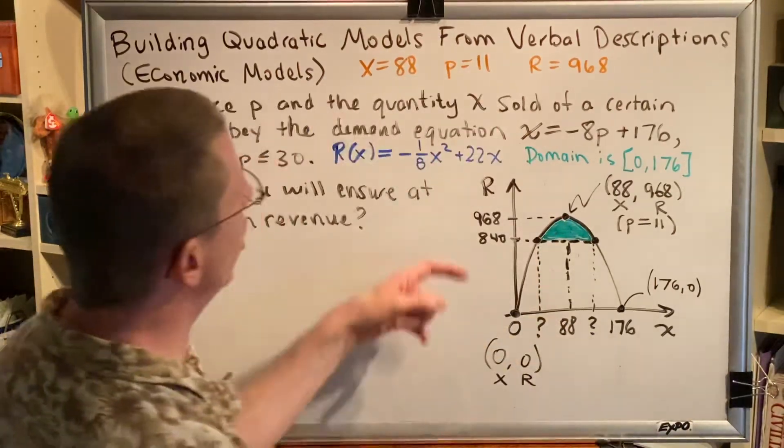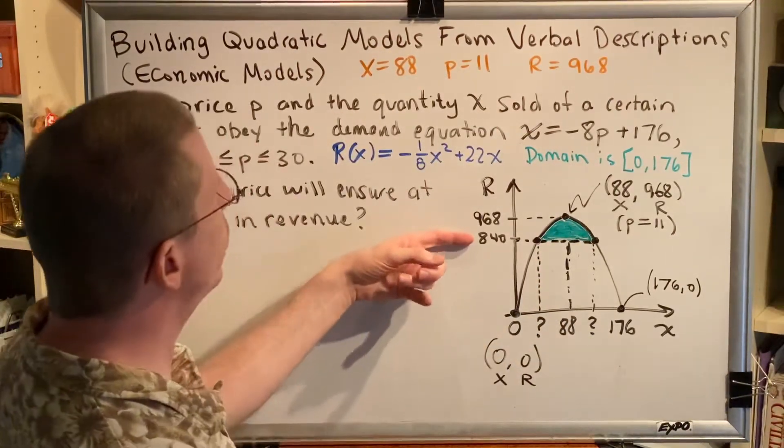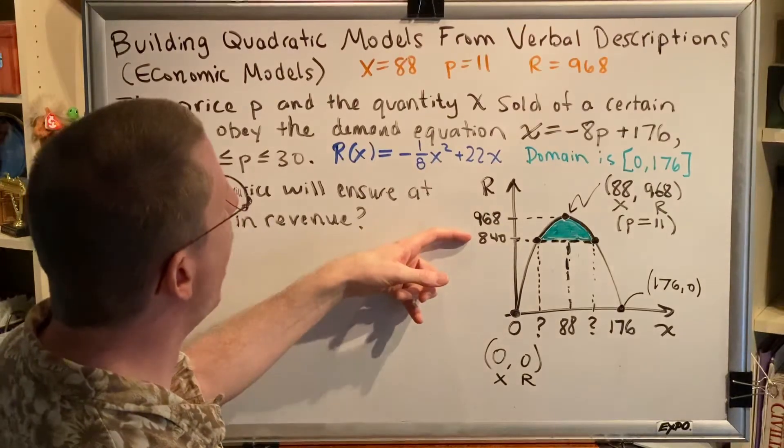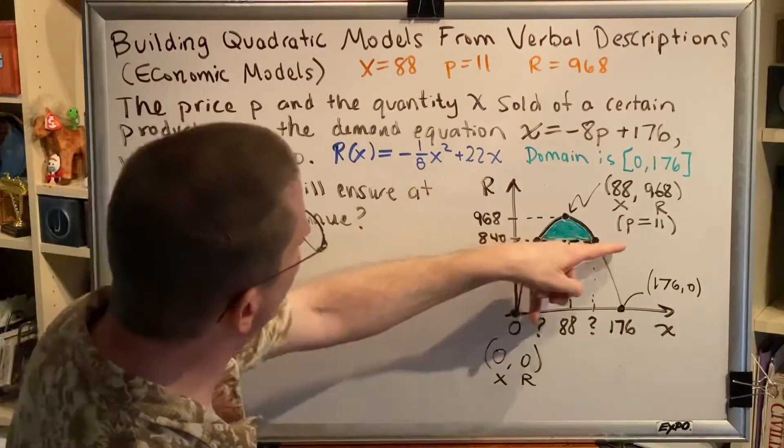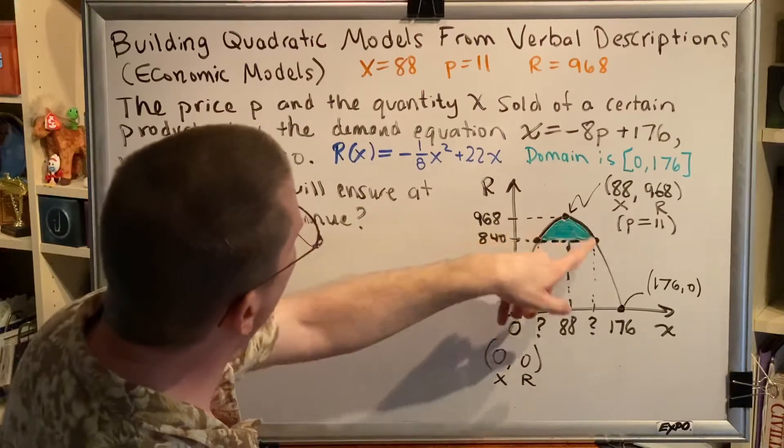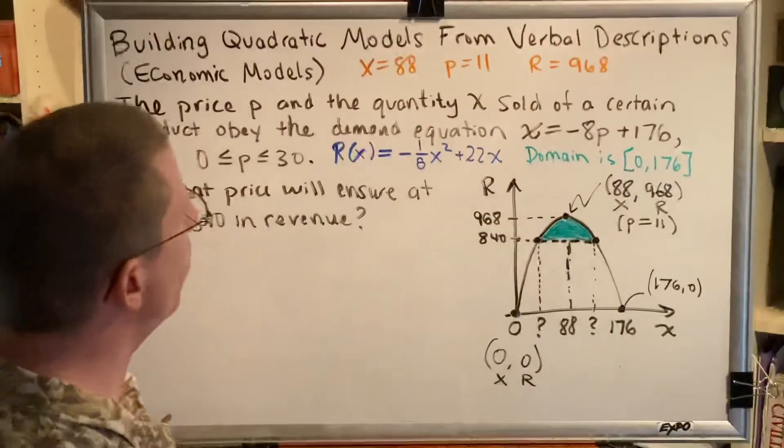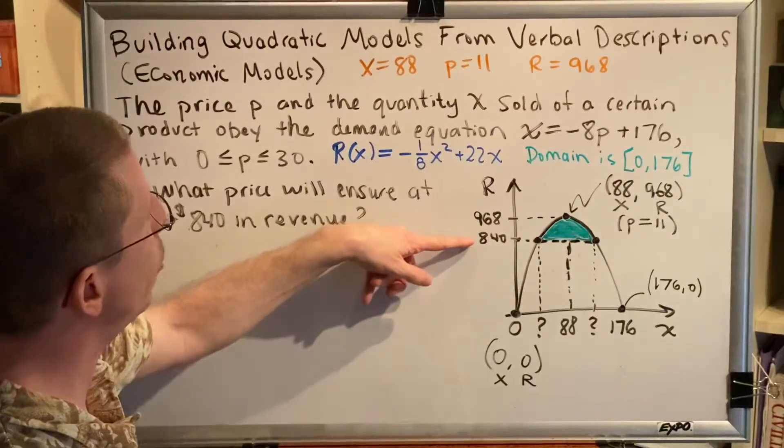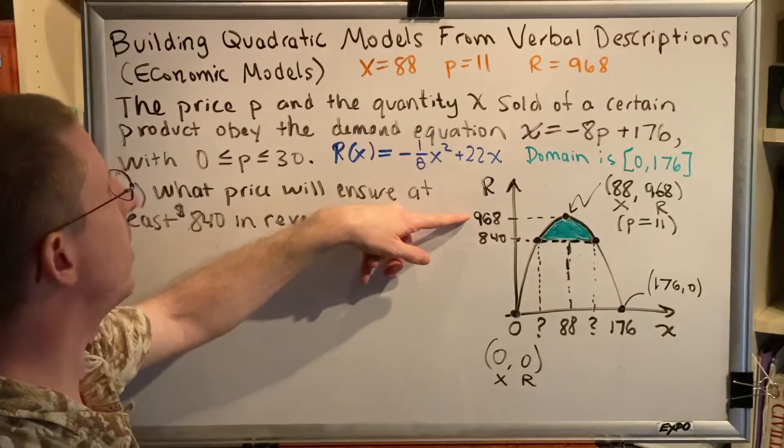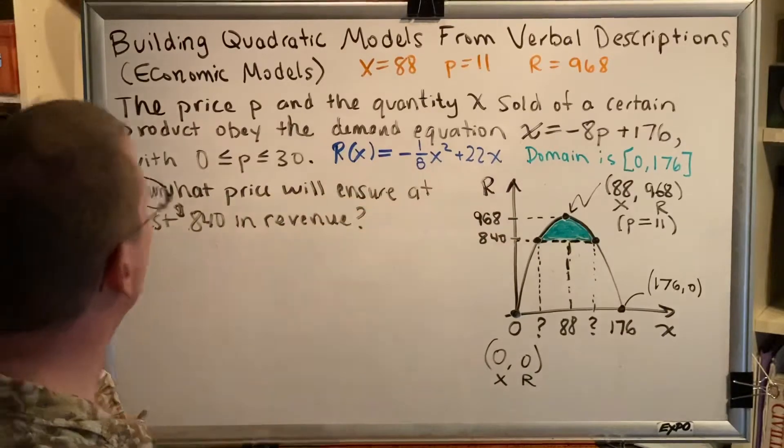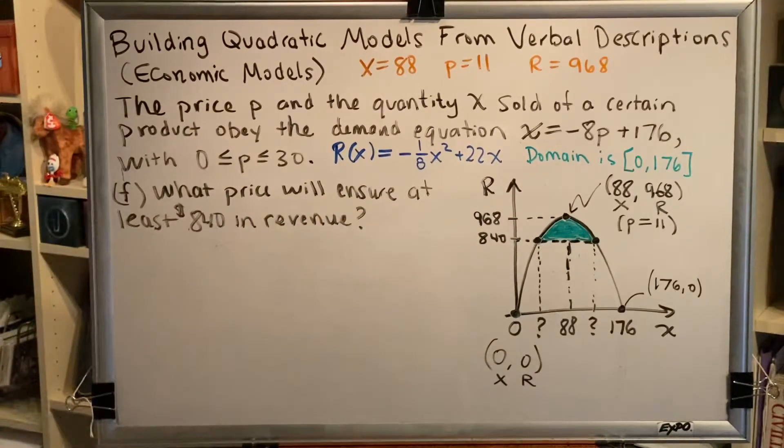So when we look at this particular diagram, what I've done is I've drawn 840 on the y-axis or the r-axis, as well as cut this parabola, and then I've shown this green shaded region. Anything inside this green shaded region would represent a revenue that is between $840 and $968. Remember, $968 is the maximum. Let's now solve this problem.